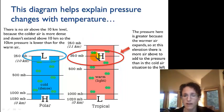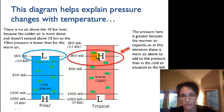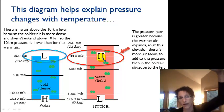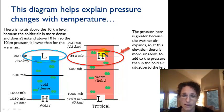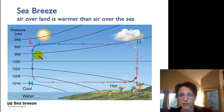In the warm air column, air is more spread out. So at the same elevation, there's more air above you and therefore more pressure. Therefore, aloft you have a higher pressure in the warm column, and in the cold air column aloft you have a lower pressure.